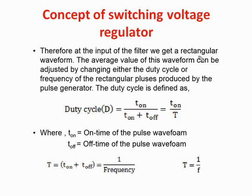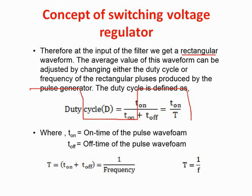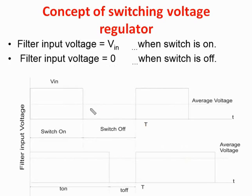Therefore, at the input of the filter we get a rectangular waveform by switching the input voltage on and off. The average value of this waveform can be adjusted by changing either the duty cycle or the frequency of the rectangular pulse produced by the pulse generator. By changing the duty cycle — that is, the on time and off time of the switching element — we control the average output voltage.